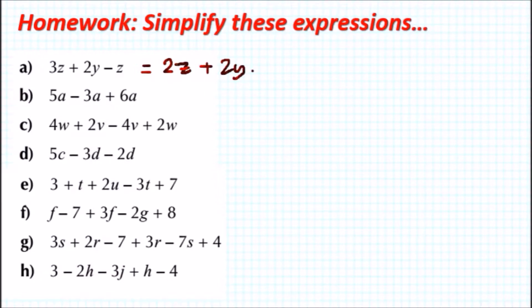Now for part b, we have 5a - 3a + 6a. Easy, because they're all a's we can just add and take away and do the math. So 5 take away 3 is 2, and 2 plus 6 is 8, which is 8a.